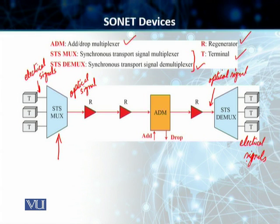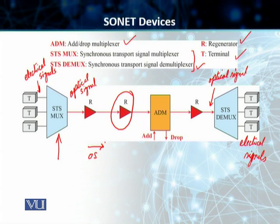Then we've got the regenerator. The regenerator is simply a device that extends the length of our line — it's basically a repeater. It takes in the optical signal, and then the process of demodulation and modulation happens here.